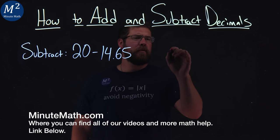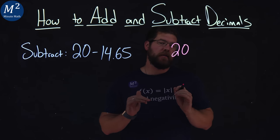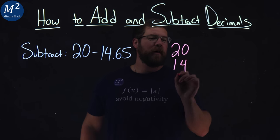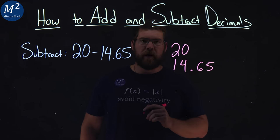First, let's start with that 20. We want to write the 14.65 underneath it and line up our place values. 14 goes right underneath the 20, then we have a decimal, and we have a 65 to the right.